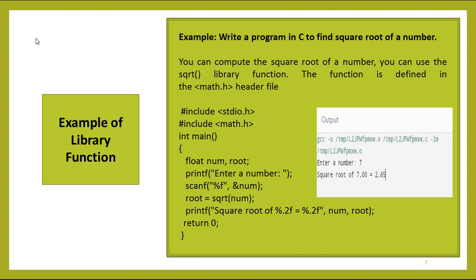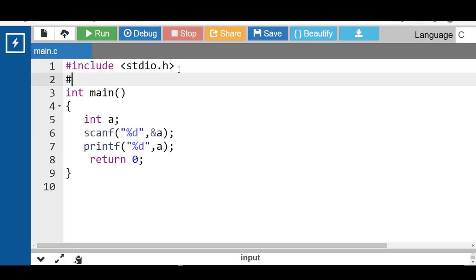The next example is math.h. This header file contains mathematical functions such as square root, power, exponent, log, sine, and cosine functions. If you want to compute the square root of a number, you can use the sqrt library function, which is defined in the math.h header file. Let's look at a program to find the square root of a number. First, include the header file: #include math.h. This header file contains mathematical functions.